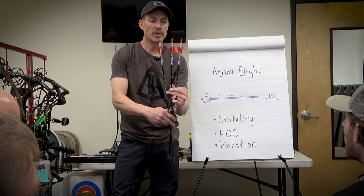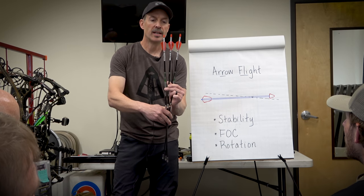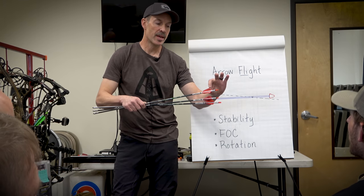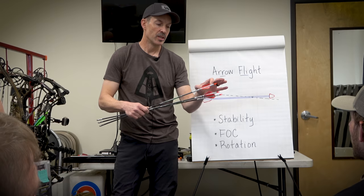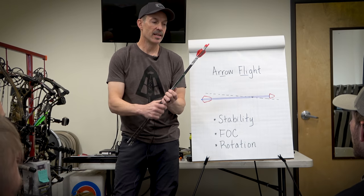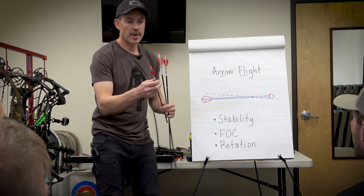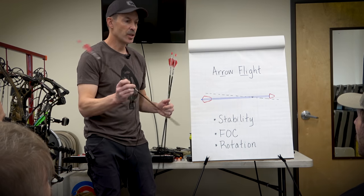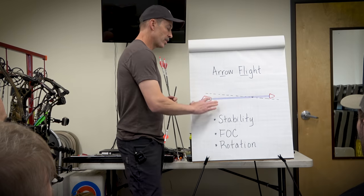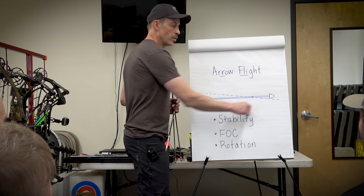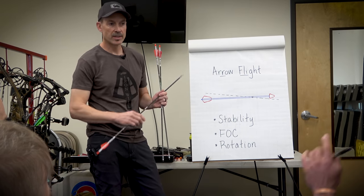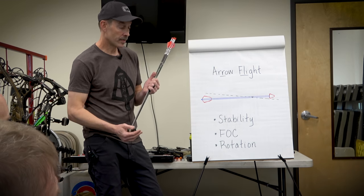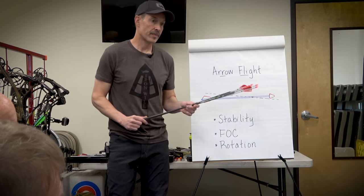I've got a few different veins here that I've shot all these for at least a season. Blazer, max hunter, fusion two, Q2I. What's similar about them is they're all pretty similar in height. They're all around that 0.58, 0.6 height, two inch long. I found that size vein with about two and a half to three degrees offset or helical does a good job with creating good stability with a fixed blade head of about that size.